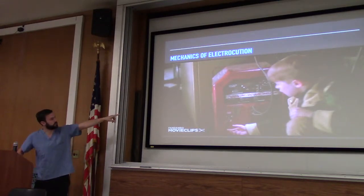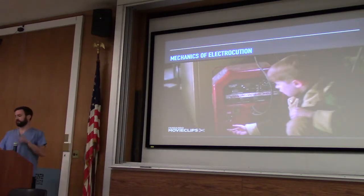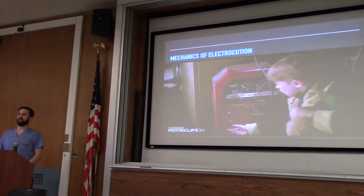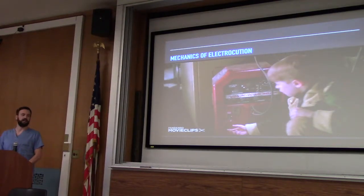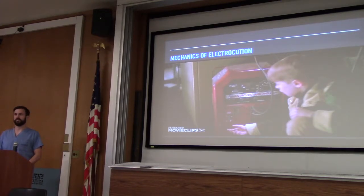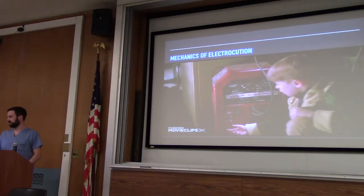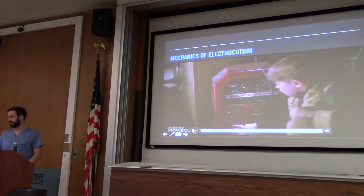Down here you can see the voltages. Low voltage is kind of arbitrarily defined as less than a thousand volts — that's going to be in houses; plugs are 240 to 120. The only high voltage things, really, are power lines, and I think third rails are high voltage too. So most of what we'll see is low voltage. Let's say our patient is AC, low voltage.